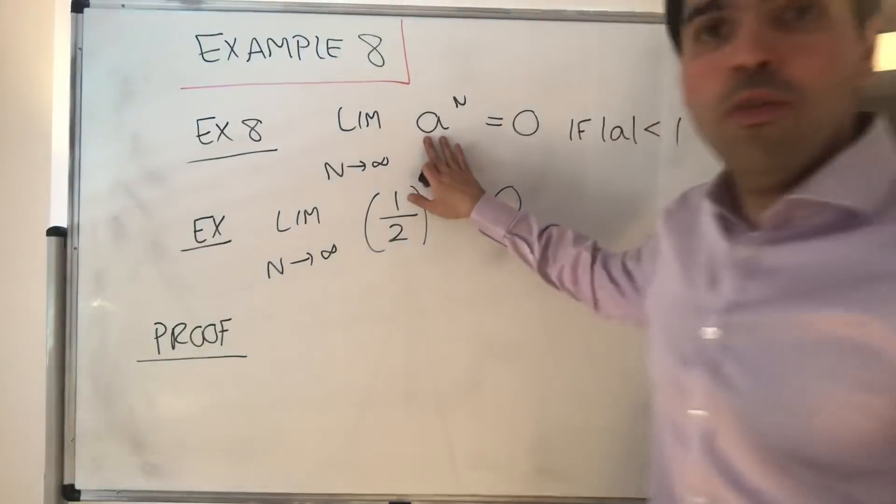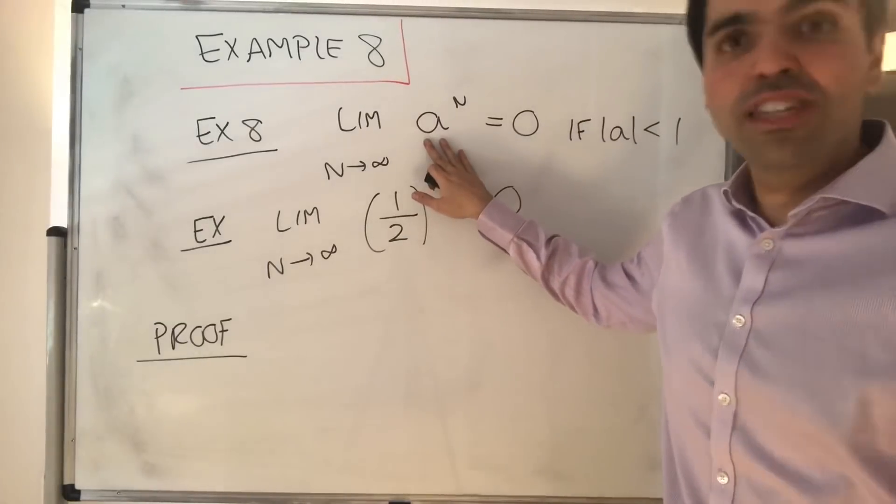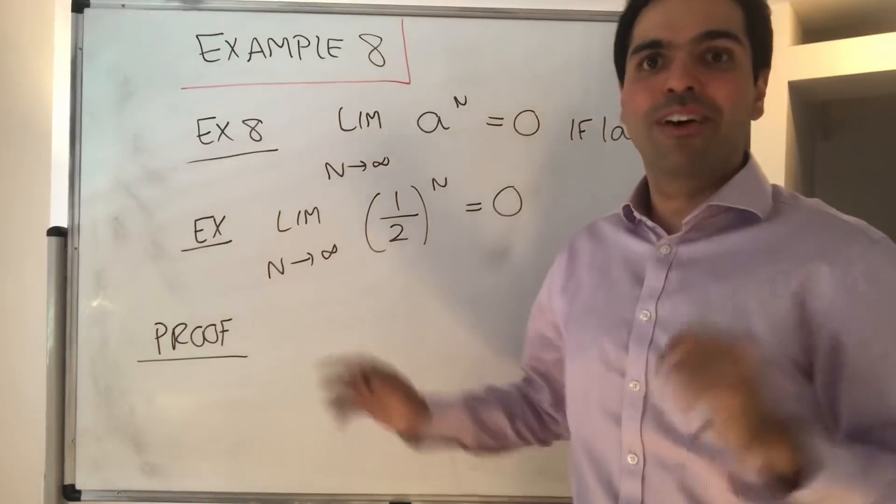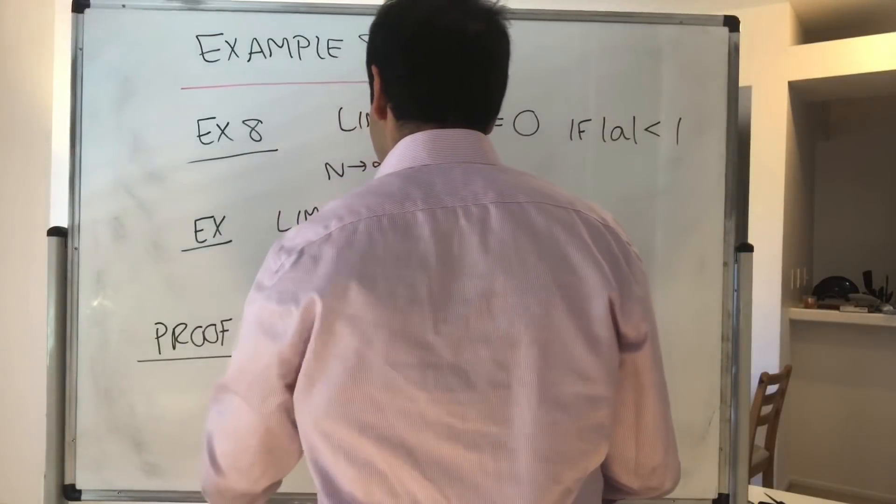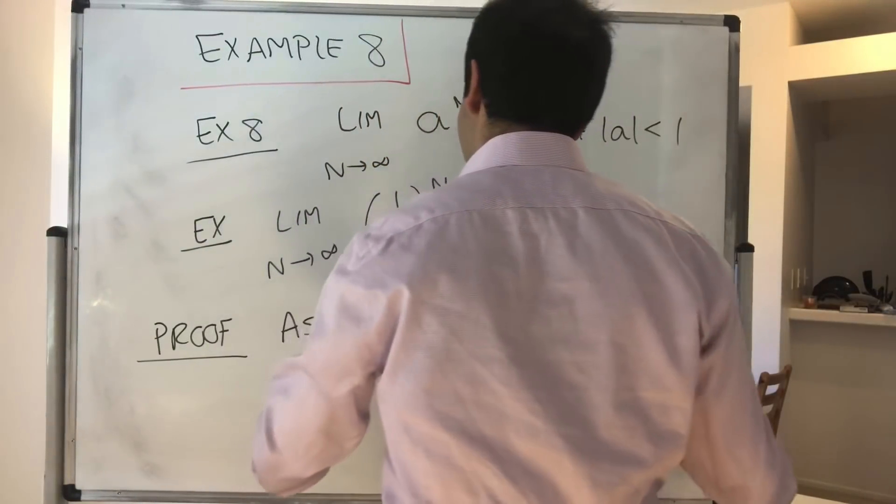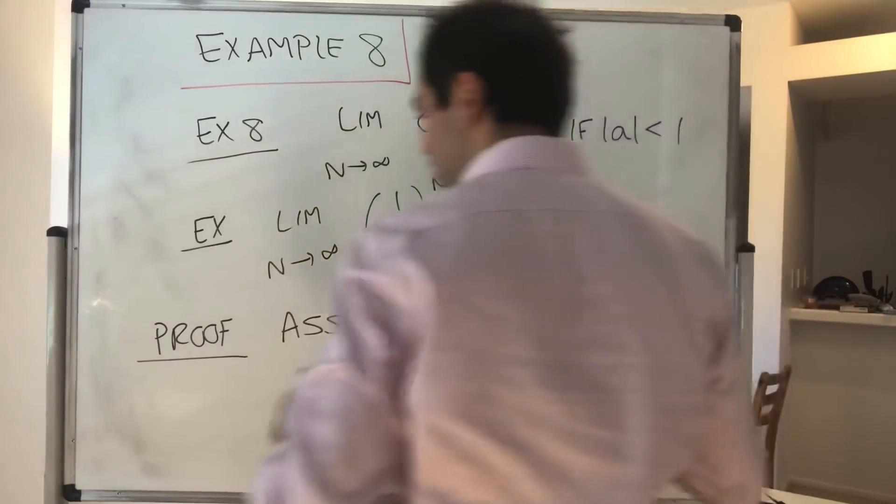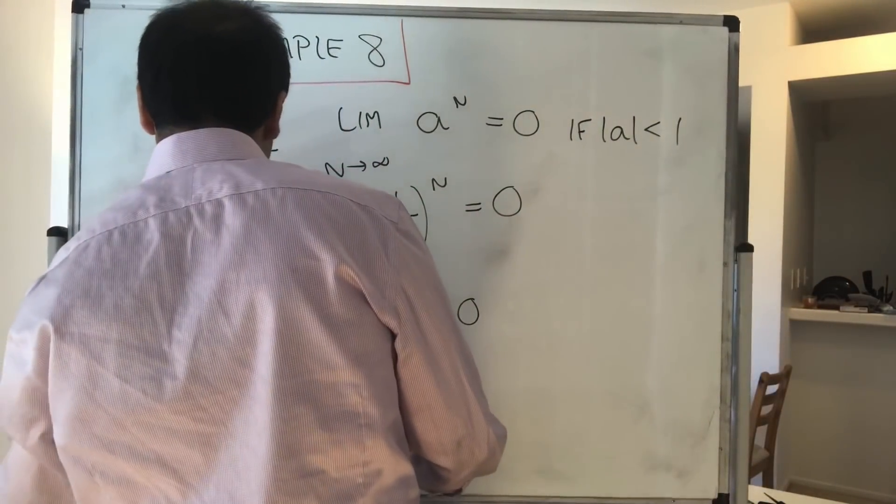First of all, if a is zero, then zero to the n is always zero and the result has been proven. So assume the interesting case that a is non-zero. And the first step is to do some scratch work.